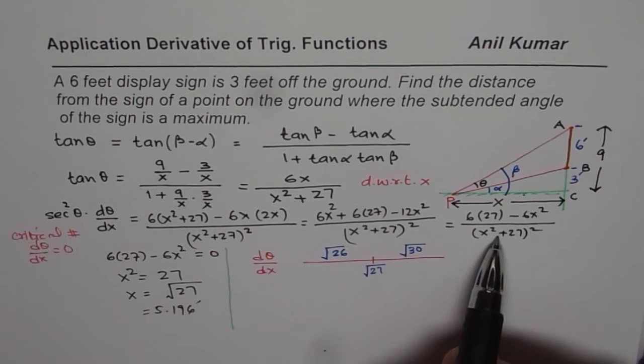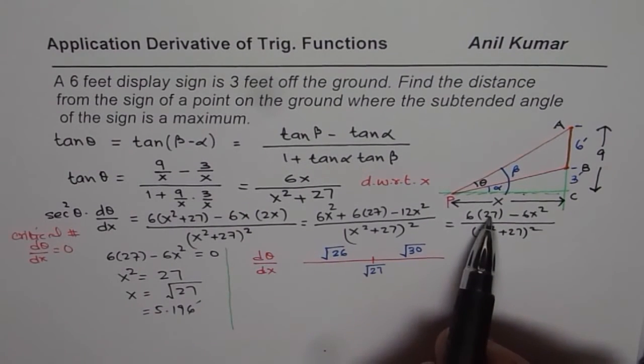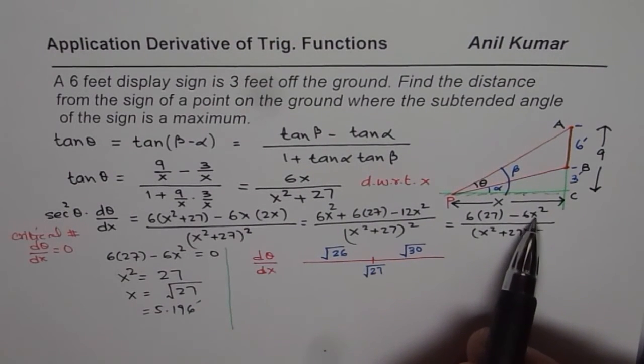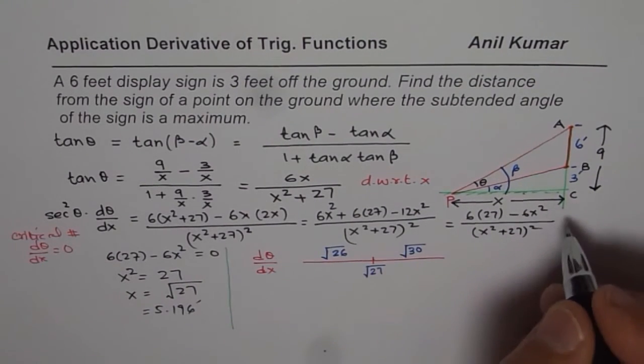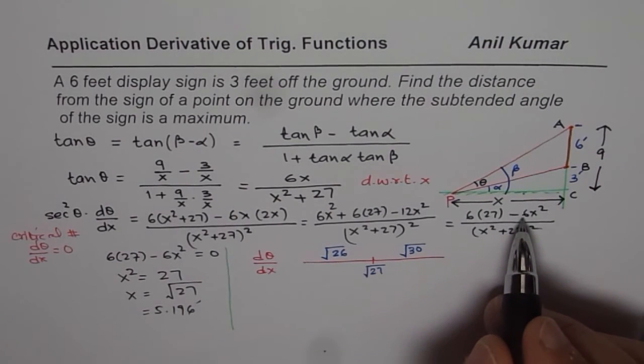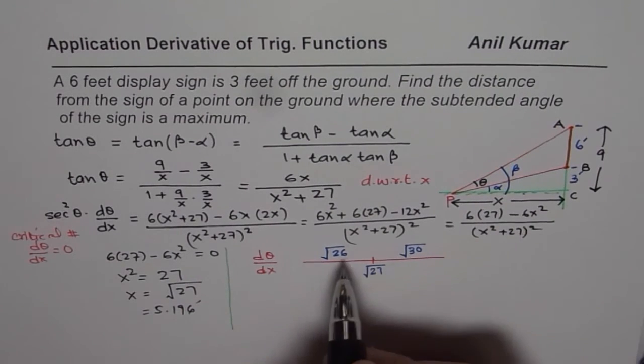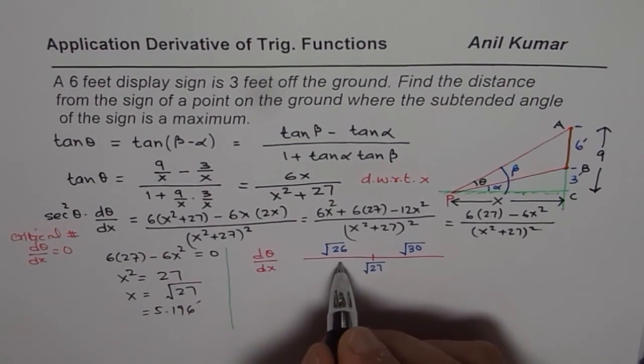Now if I substitute, denominator is positive, correct? If I substitute here 26 square, it is 6 times 27, this is 6 times 26. Of course, that is going to be a positive value, right? So this is going to be positive, right?